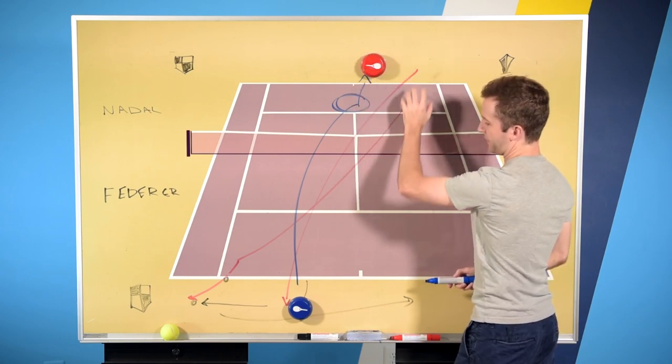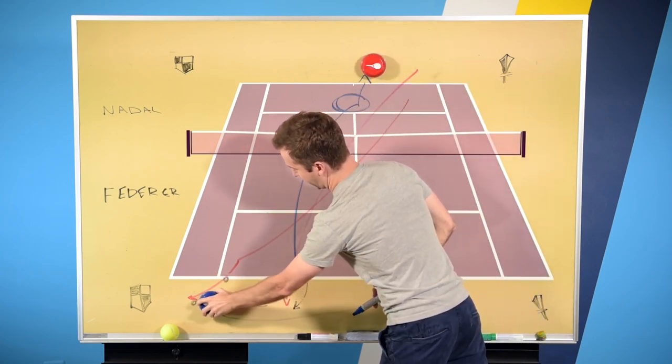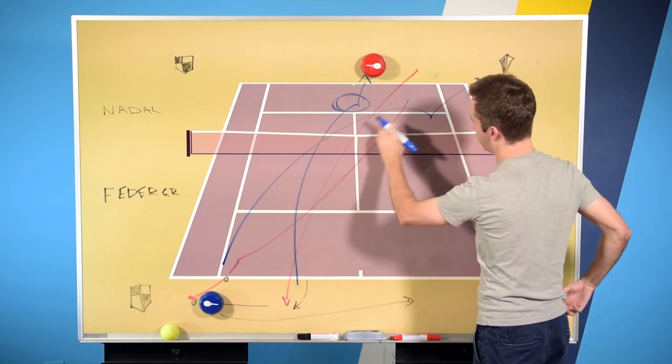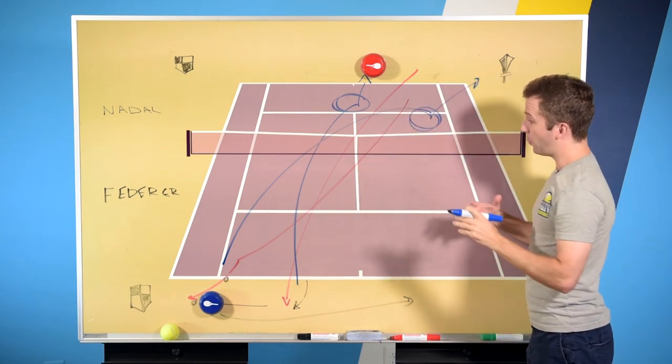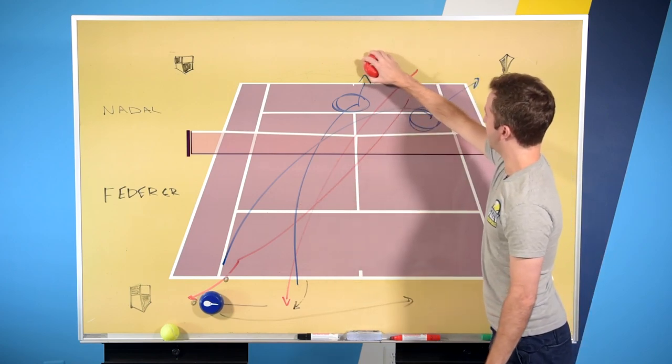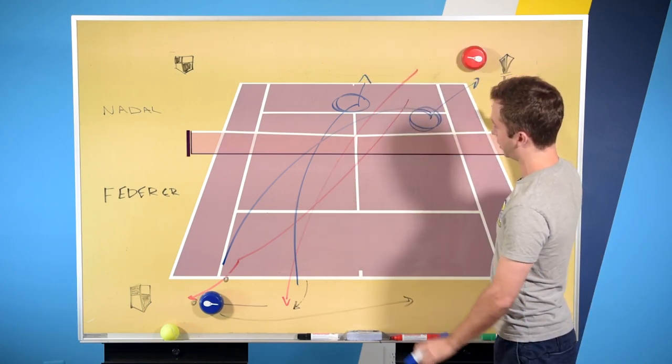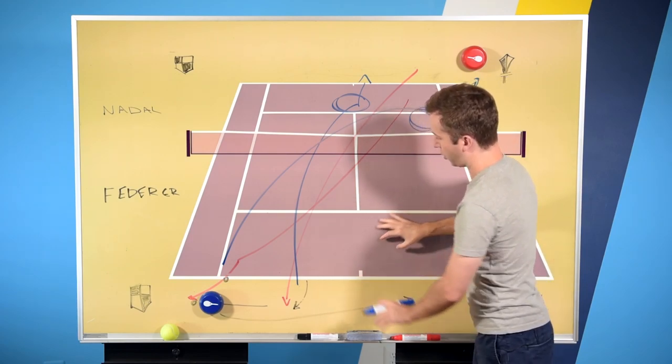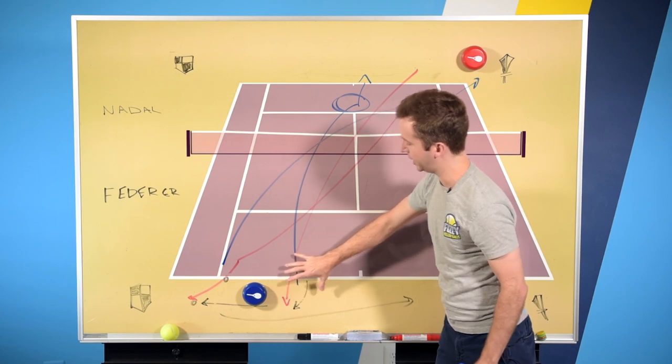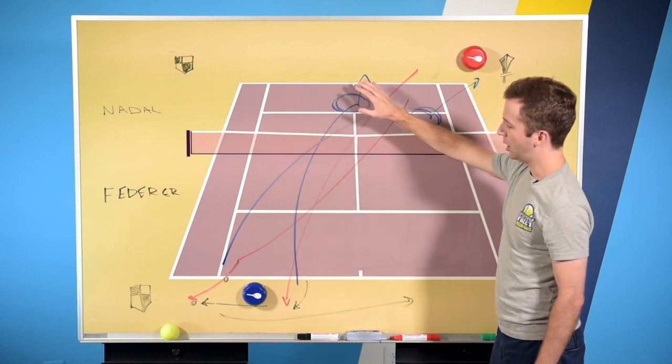Now, if that doesn't happen, if Rafa is able to pull him off the court with this next shot, then Fed's going to hit a hard backhand cross court, probably try to angle it, but he's going to go big again. It's going to be a lower percentage backhand, and he's going to try and pull Rafa off the court, hopefully get some ball cross court again that will be tailing into him where he can hit a forehand and take control of the point.